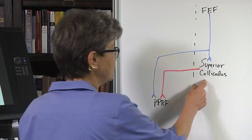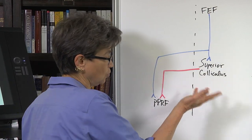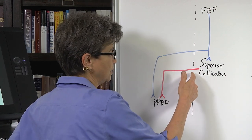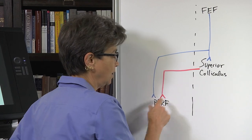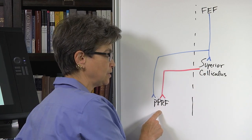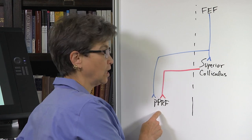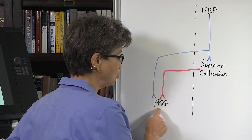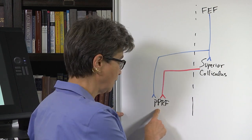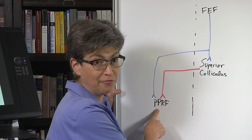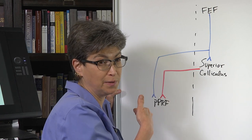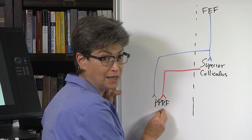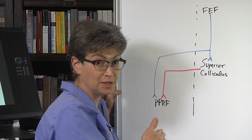The superior colliculus outflow is a tract that crosses the midline, so the superior colliculus produces a saccade to the contralateral side. The horizontal gaze center on the left produces a leftward eye movement, so the right superior colliculus will engage the left horizontal gaze center to make a leftward saccade.